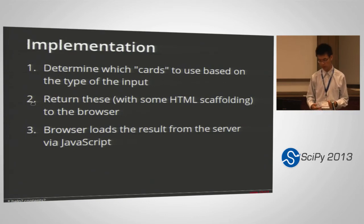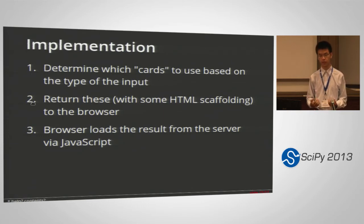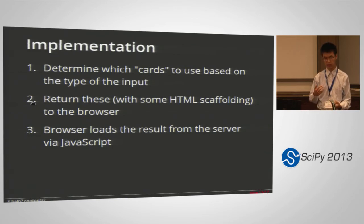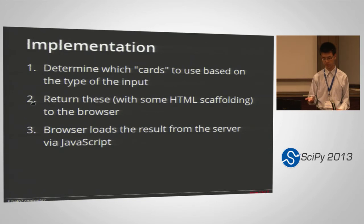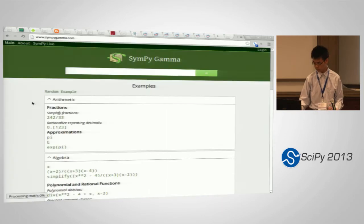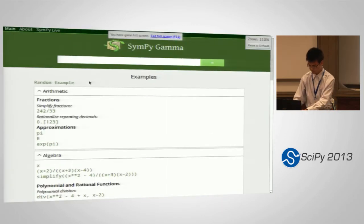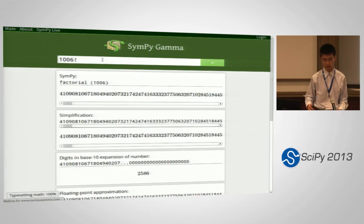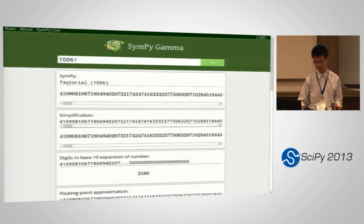Parsing is the most complicated part. We have something called implicit parsing in SymPy, which is designed to make it easier for users who aren't as familiar with Python syntax. It makes parentheses optional in most cases, lets you omit multiplication signs, lets you use the caret as exponentiation instead of exclusive or, and lets you use exclamation mark syntax for factorials.